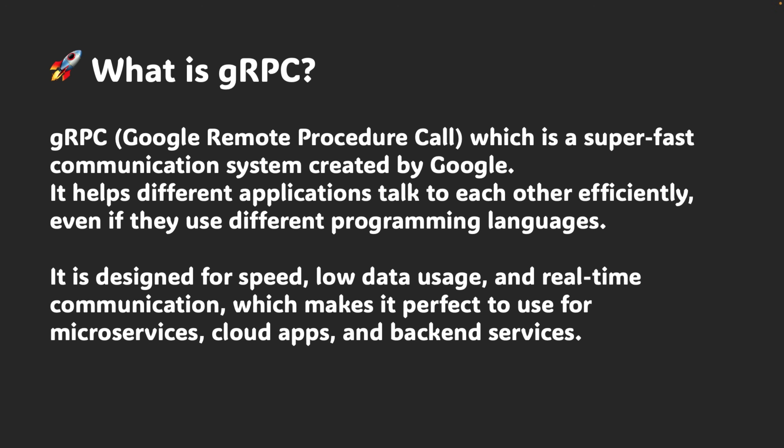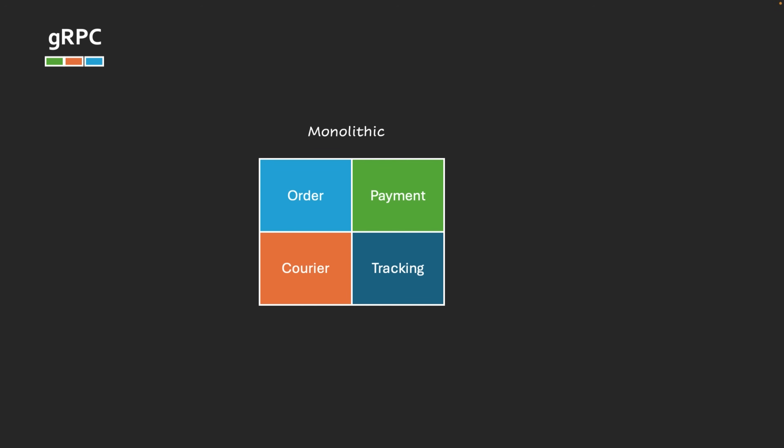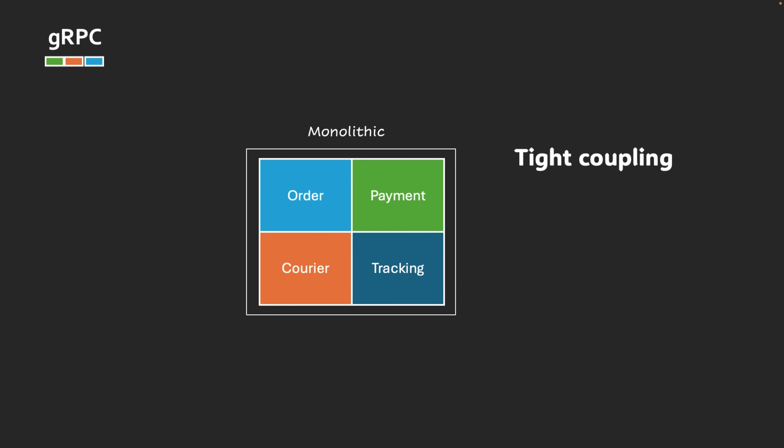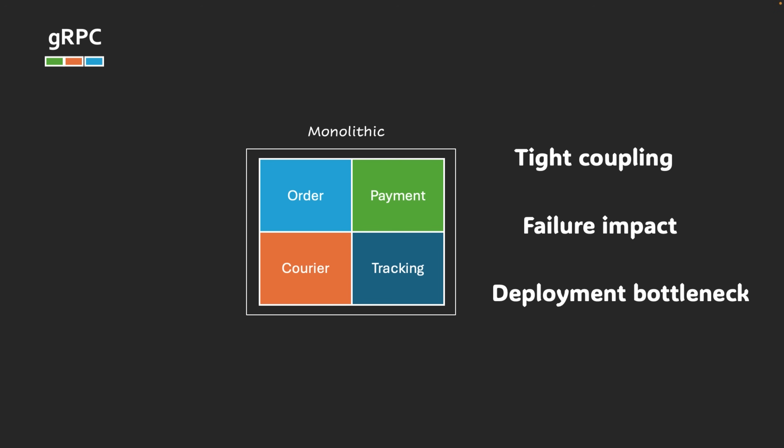Before learning any concept, let's understand the problem we had without gRPC. Imagine you are building an e-commerce application using a traditional monolithic approach. In this model, all the business logic — whether it is for order, payment, or tracking — is bundled together into a single WAR or EAR file and deployed on a server. However, monolithic architectures come with drawbacks like tight coupling, where every component is interdependent making changes difficult. A failure in one module can bring down the entire application, and even small changes require deploying the whole application.